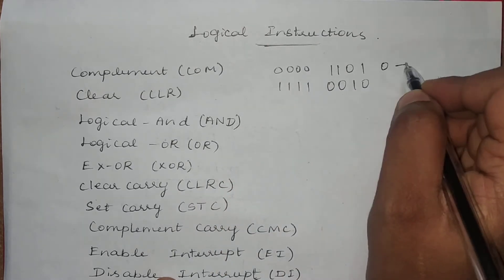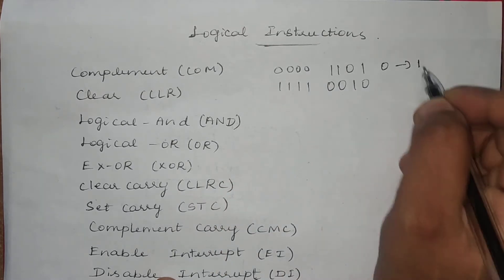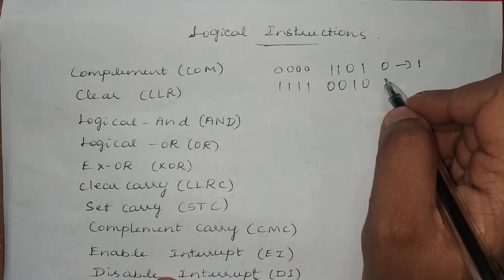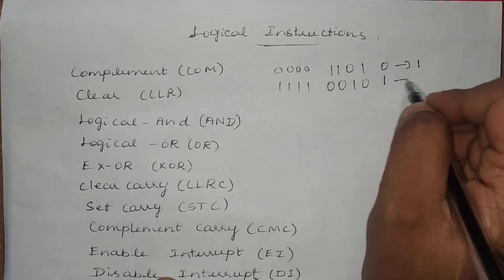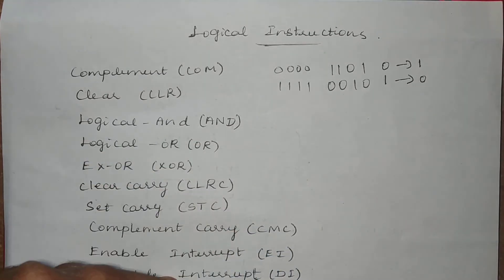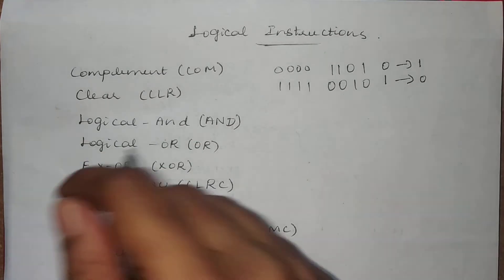If a bit is 0, it will be complemented to 1. If it is 1, it will become 0. This is nothing but complementation.